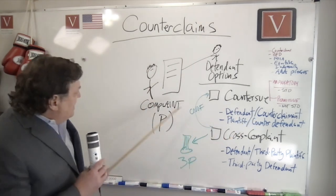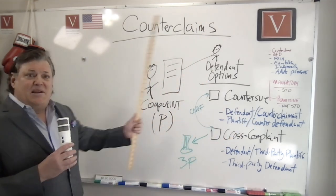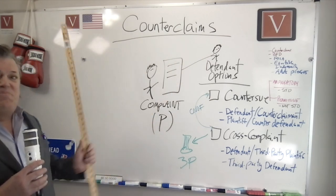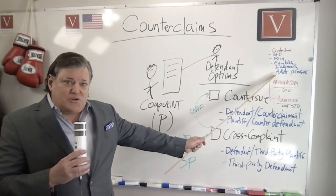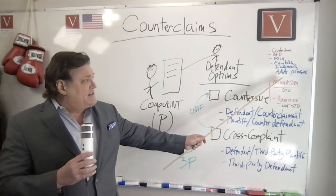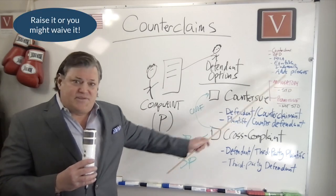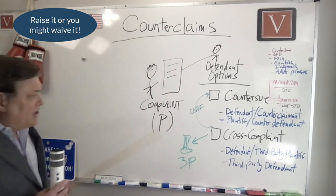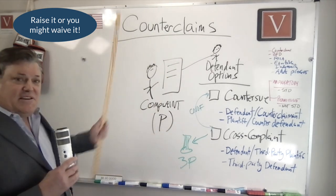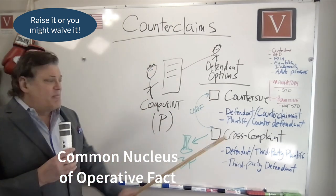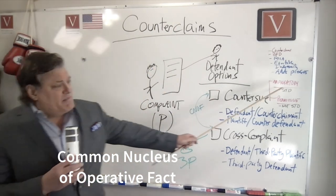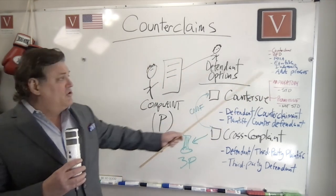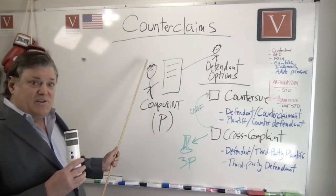If you have the same evidence, the same causes, the same claims and factual disputes, this may be a mandatory counterclaim — the same transaction or occurrence, which we also call CNOF: common nucleus of operative fact. If so, you may have to bring this claim. For example, it could be breach of contract or some kind of tort related to this — a lot of different things. Always ask yourself: do I have a mandatory counterclaim?